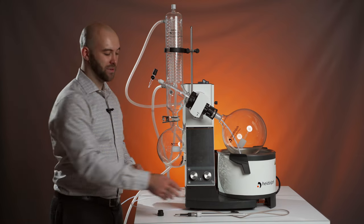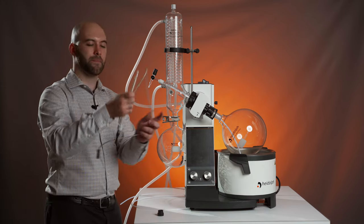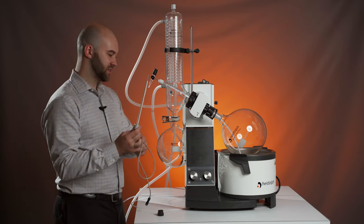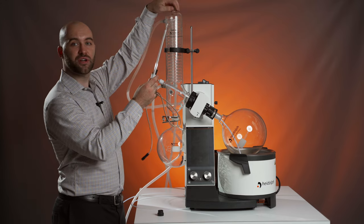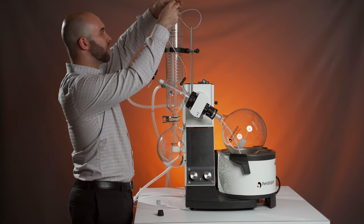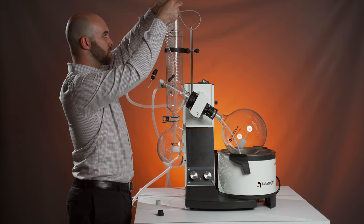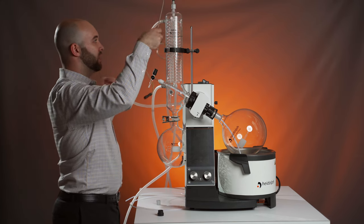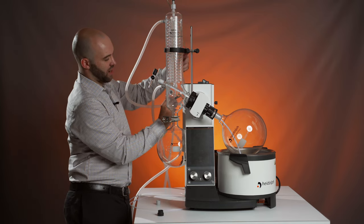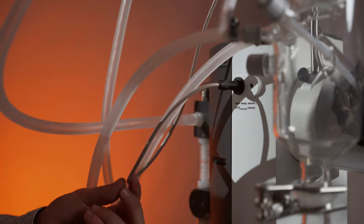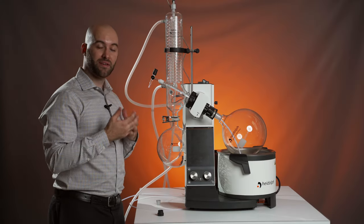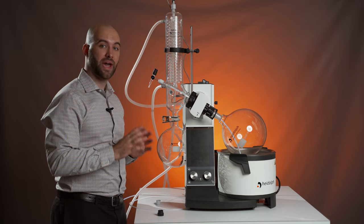The second most commonly used accessory with our HiVap is the auto accurate sensor. This sensor will replace this GL18 cap up here, slide through your coils, and plug in to the side of your HiVap drive. What this sensor enables is automatic evaporation through our dynamic auto accurate function.